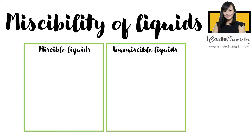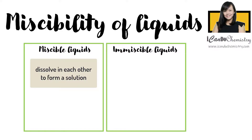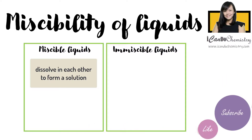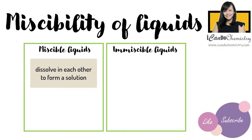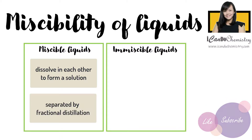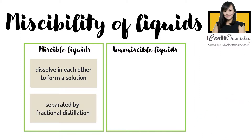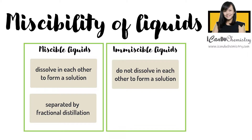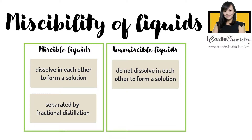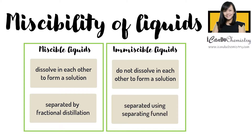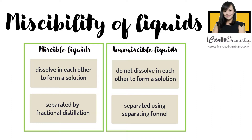In a nutshell, miscible liquids dissolve in each other to form a solution, and in order to separate these miscible liquids back into individual liquids, we use the physical method of fractional distillation. When liquids are mixed together and they do not mix to form a solution, they are immiscible. To separate immiscible liquids into individual liquids, we simply need to use a separating funnel.